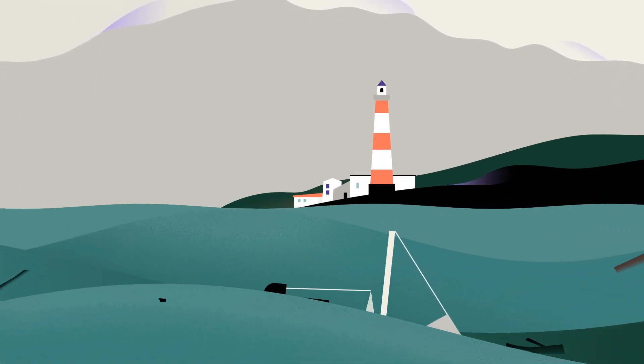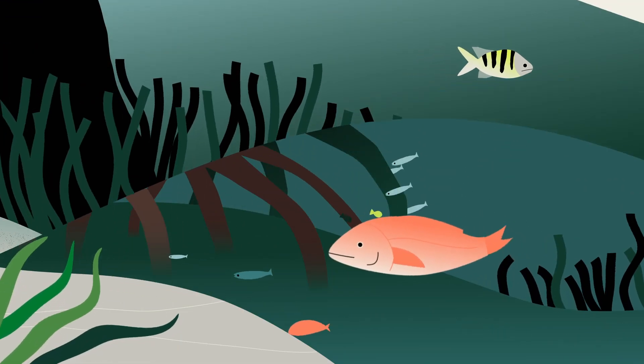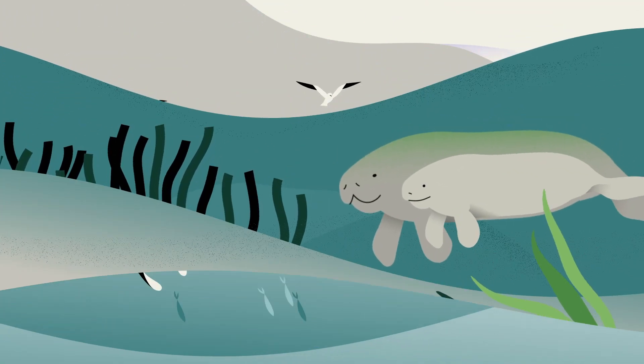And when we lose these habitats, we don't just lose climate allies, we lose protection from storms, nurseries for fish, and homes for amazing creatures like manatees, rays, and birds of all kinds.